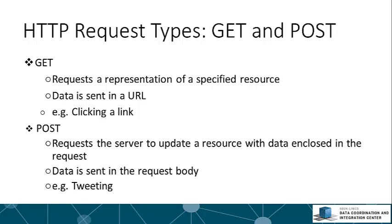HTTP specifies request types. There are many, but two very important ones are GET and POST. A GET request fetches a resource — every time you browse a website, your browser is making GET requests, asking the server to fetch whatever is at a given URL. Clicking a link initiates a GET request. A POST request modifies a specific resource. For example, when you tweet on Twitter, the browser posts your message to Twitter's servers, updating the state of the program. When your friend makes a GET request later, they'll see your tweet in their feed.